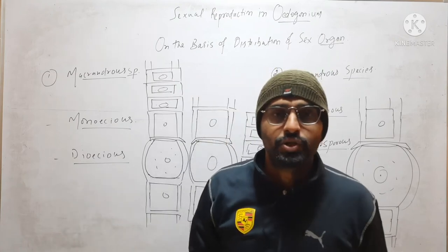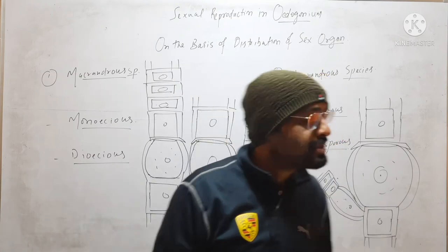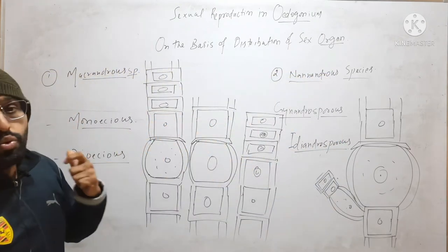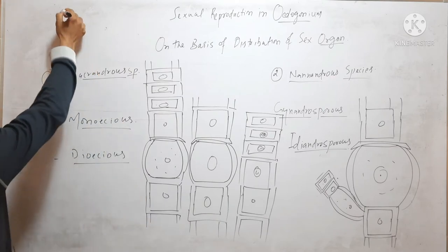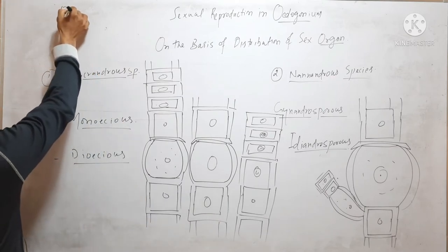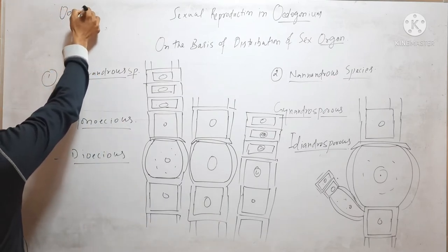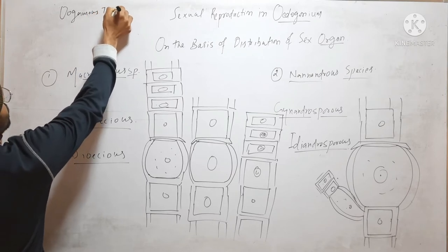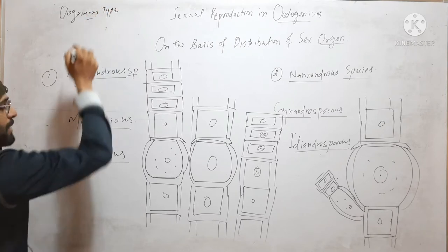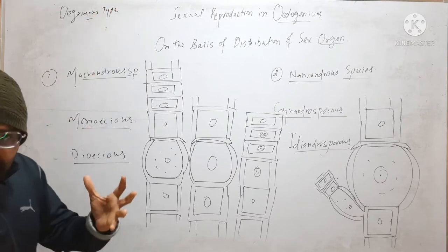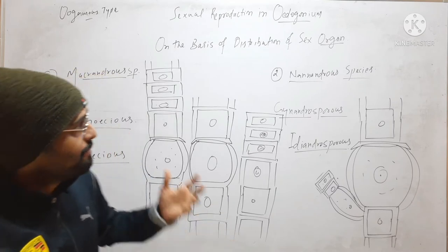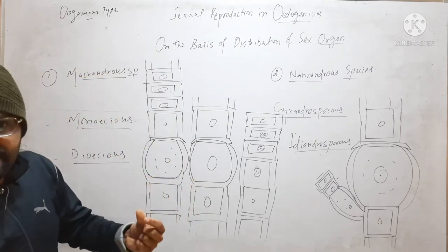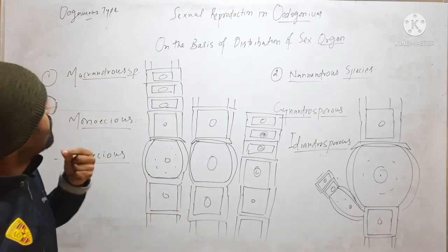Hello friends, in this video we will discuss sexual reproduction in Oedogonium. Sexual reproduction in Oedogonium is Oogamous type, meaning the female gamete is large in size and non-motile, and the male gamete is smaller in size and motile.